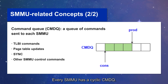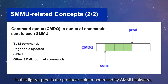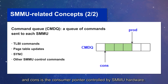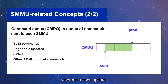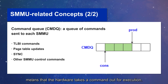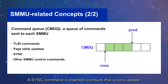Every SMMU has a command queue. In this figure, prod is the producer pointer controlled by SMMU software, and cons is the consumer pointer controlled by SMMU hardware. A prod update indicates that the software inserts a new command into the command queue, whereas a cons update means that the hardware takes the command out for execution. A sync command is inserted to ensure that a cons update runs only after all previous commands have been executed.